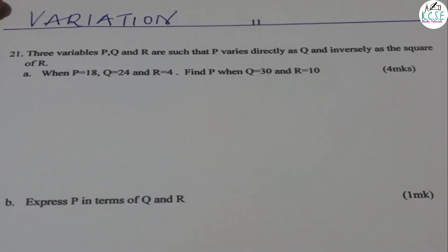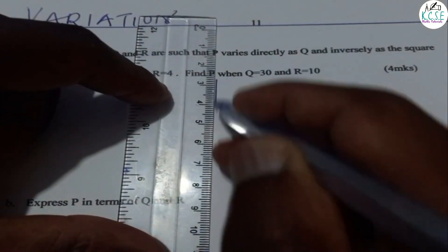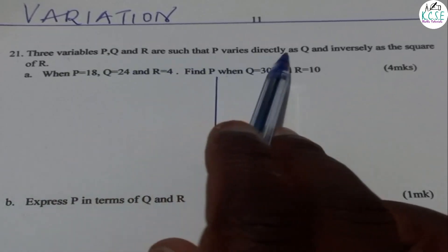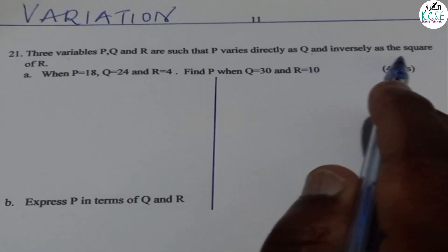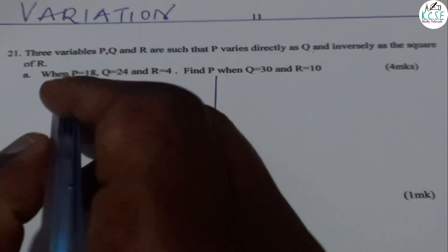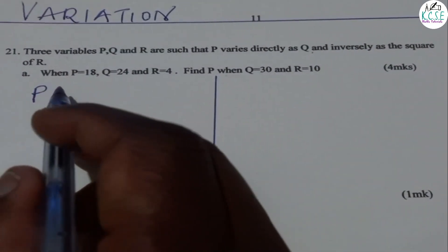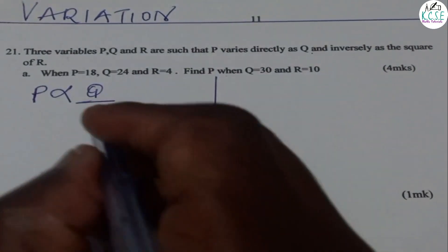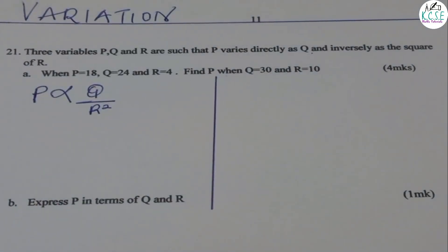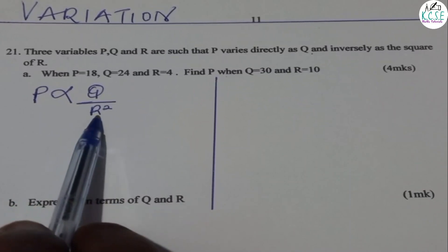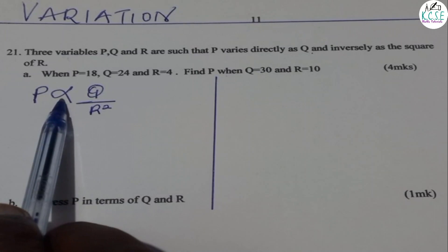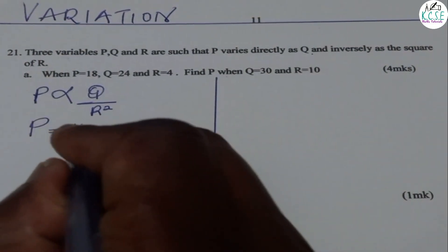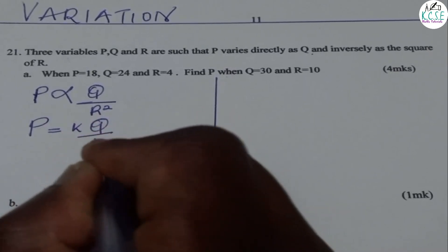For the first part of the question, you begin by writing the variation. P varies directly as Q and inversely as the square of R. When we remove the sign of proportionality, we introduce a constant K. So we have P equals KQ divided by R squared.